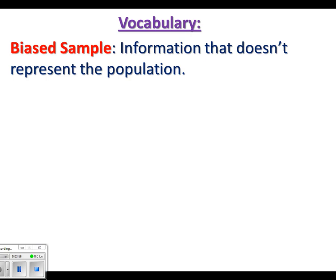A biased sample is basically information that doesn't represent the population. Bias means to kind of be in favor of something. We all have our biases — I have my biases towards music; I only like certain kinds and tend to ignore others. Even though there's plenty of great music out there, I'm not listening to it. That would be biased.